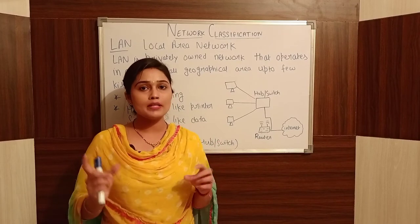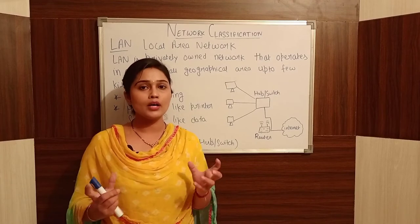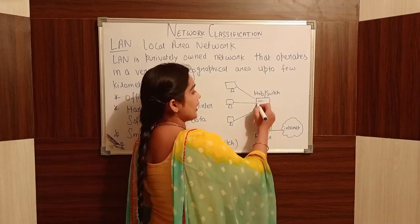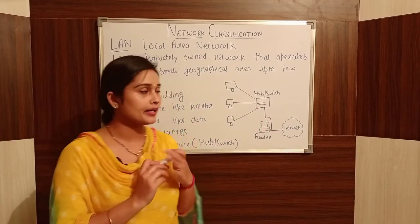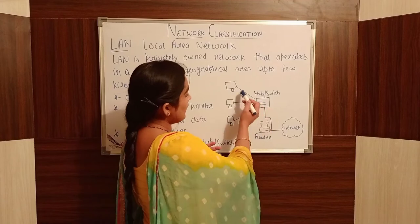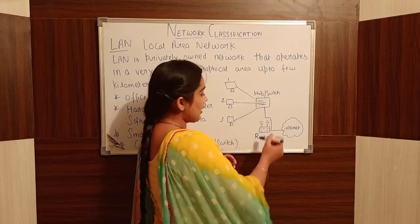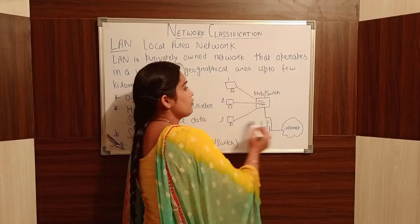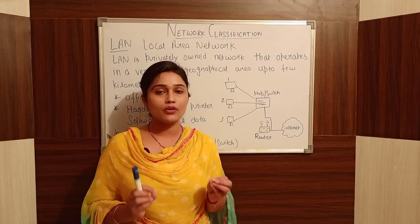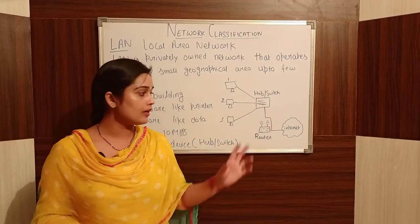The central device is a hub or a switch. For example, three PCs are connected to a hub, and the hub is connected to the local area network. Within this setup, hardware and software can be shared. However, there is no internet access through the hub alone.